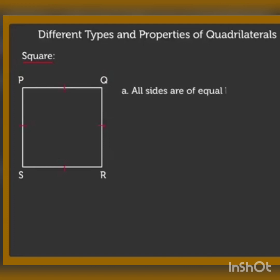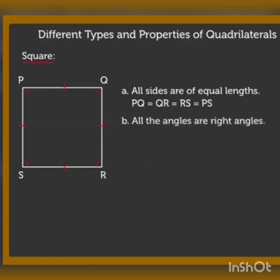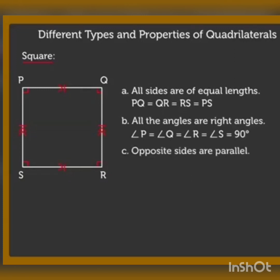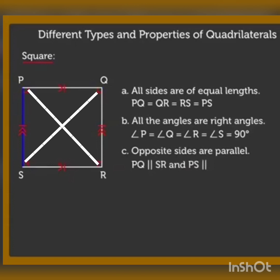In a square, all sides are of equal lengths and each angle is equal to 90 degrees — angle P, angle Q, angle R, and angle S are each 90 degrees, so the sum of the four angles is 360 degrees. Opposite sides are parallel, and it has two diagonals, PR and QS, which are equal and bisect each other.